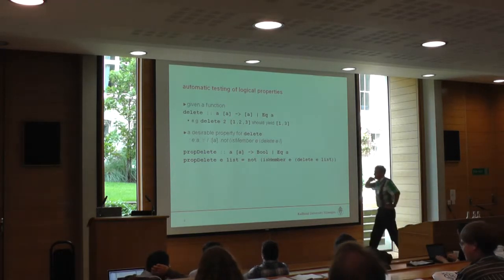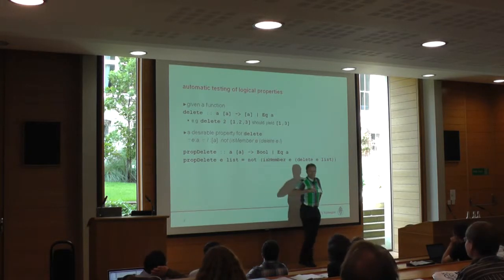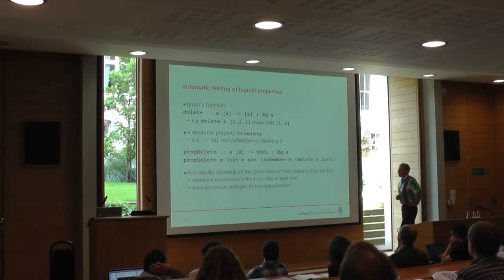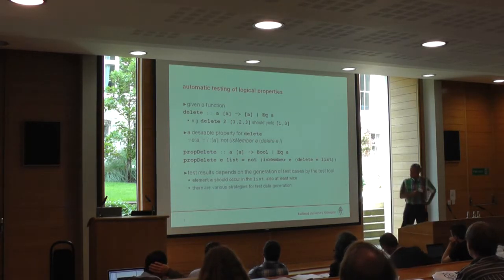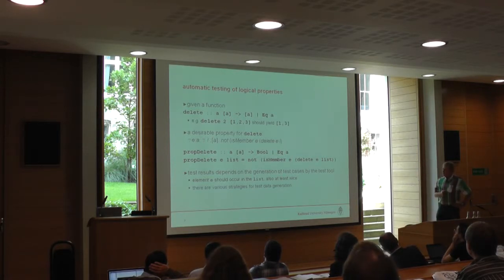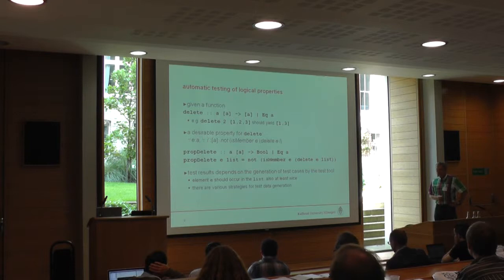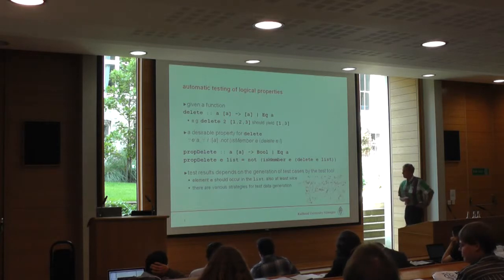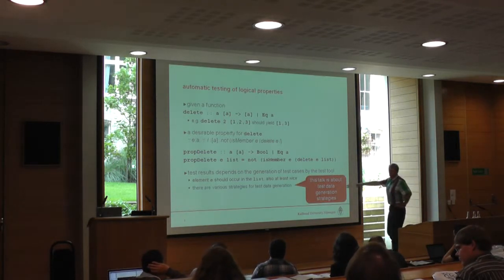In order to test these things, my test system has to generate lists and values. The results of testing depend on the values generated by the test system in order to evaluate this property. This talk is about the generation of test data.